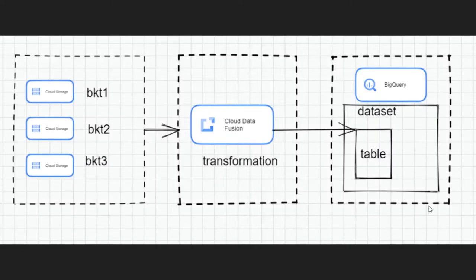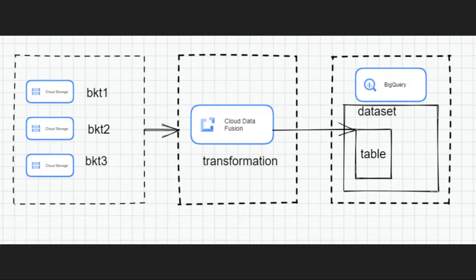Hello, in this video we are going to see how we can build a sample data pipeline using Cloud Data Fusion. Looking at the block diagram, I have a GCS bucket with some CSV files containing employee data, and I am using Cloud Data Fusion to apply some transformations on the data, then loading it into Cloud BigQuery. Let's go to the Cloud Console and see how we can create a data pipeline using Data Fusion.